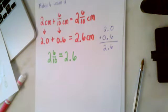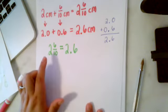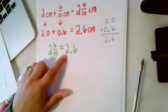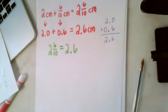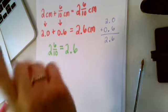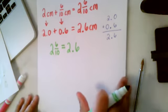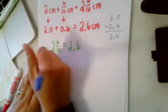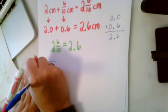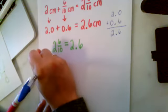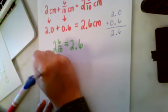So now let's say I want to draw this 2 and 6 tenths or 2.6 as an area model. The first thing I have to think about is how many tenths are going to be in each whole. We know we have 2 wholes and 6 tenths, but how many tenths are in each whole? Well if I'm dealing with tenths, then in one whole we should have 10 tenths. So I'm going to draw one area model and I'm going to section this into 10 equal parts.